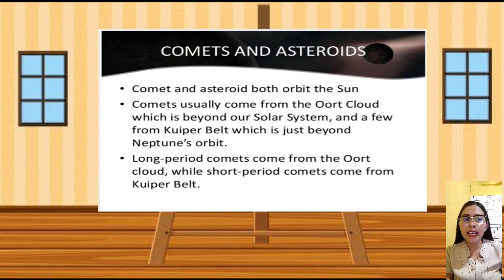Comets usually came from the Oort cloud, which is beyond our solar system, and a few from Kuiper Belt, which is just beyond Neptune's orbit.